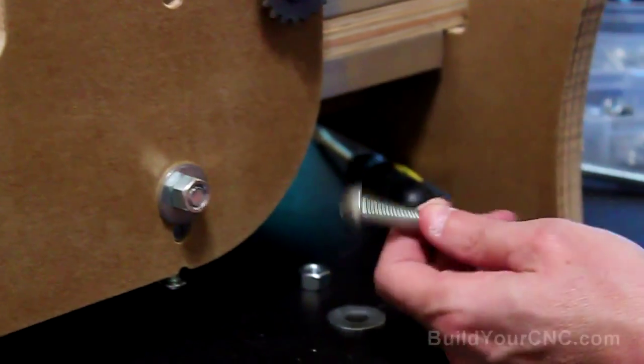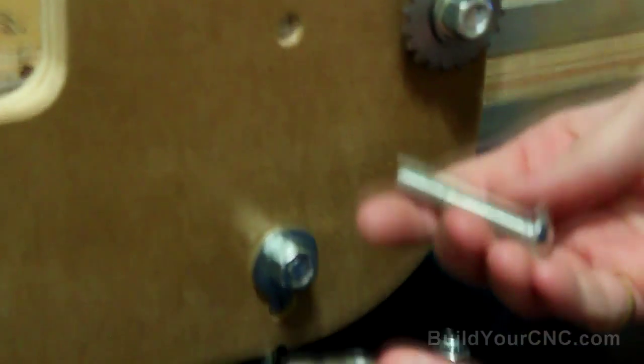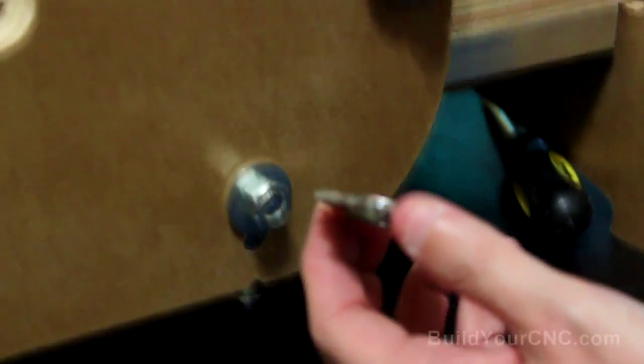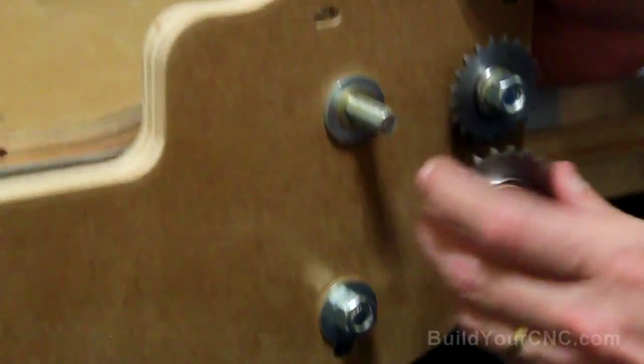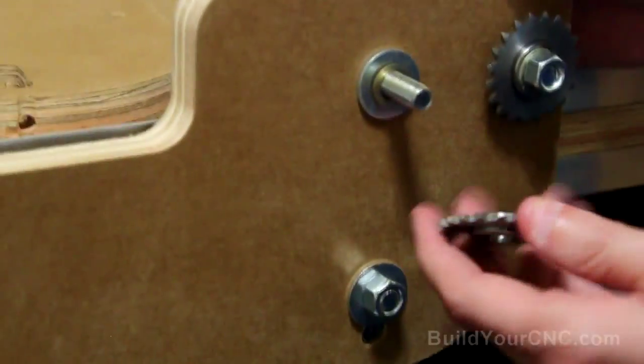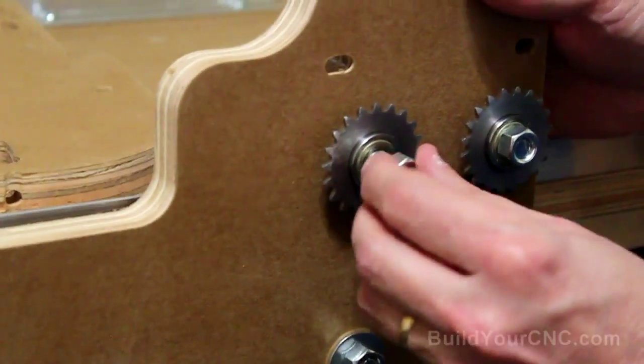To finish up this gantry side, we'll need another idler sprocket on this end and we'll be using a one and three-quarter inch idler sprocket.